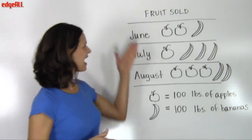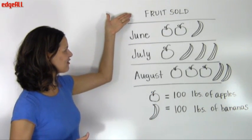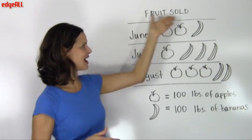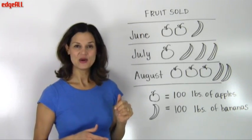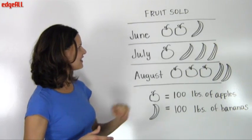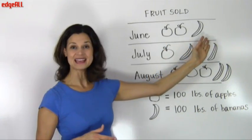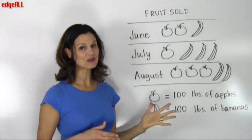So, if we have a graph like this for a farm, keeping track of the amount of fruit sold, we can see as we look at this graph, that they have both apples and bananas on the same graph.